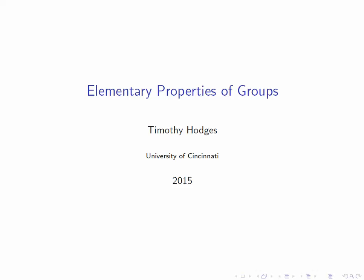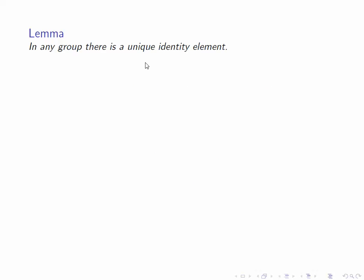For instance, in the definition of a group, we are guaranteed the existence of an identity element, but we're not told whether this element is unique or not. There could be two or three or infinitely many different identity elements. So our first lemma is the assertion that in fact there is a unique, a single identity element.